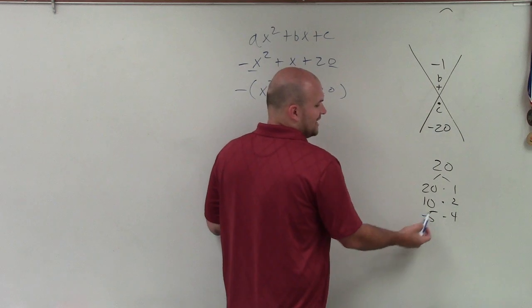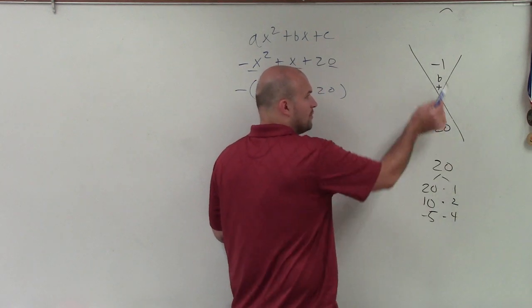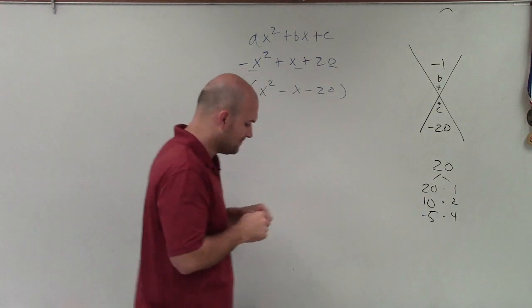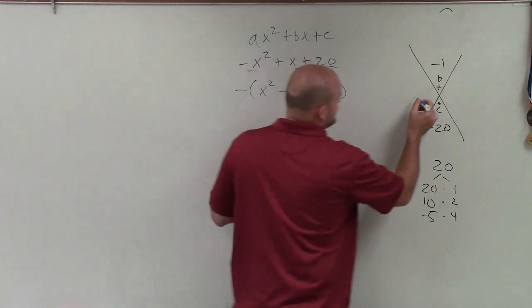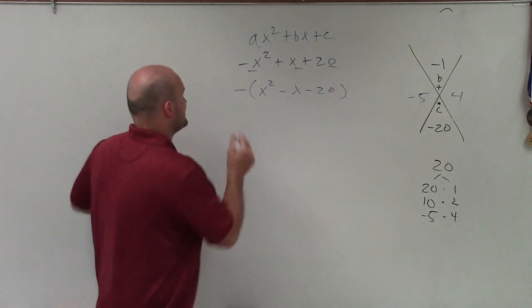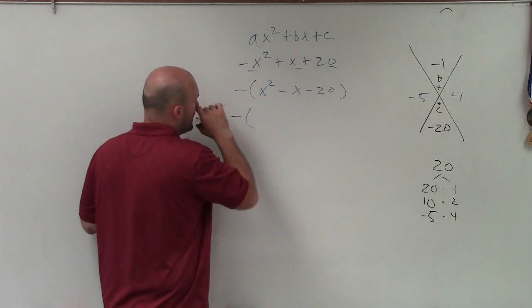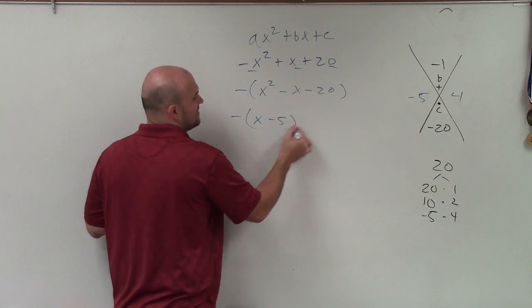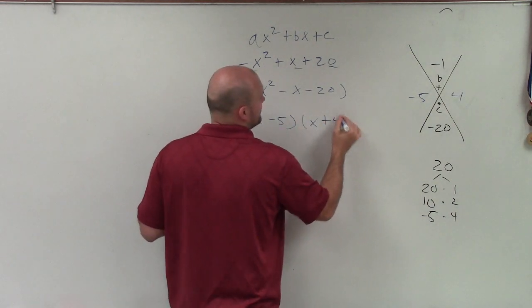And let's double check. Negative 5 times 4 is negative 20. Negative 5 plus 4 is going to give me negative 1. So therefore, those are my two factors, which I'll just write in here, negative 5 and positive 4. Now I continue with this outside, and then I just factor these down to x minus 5 times x plus 4.